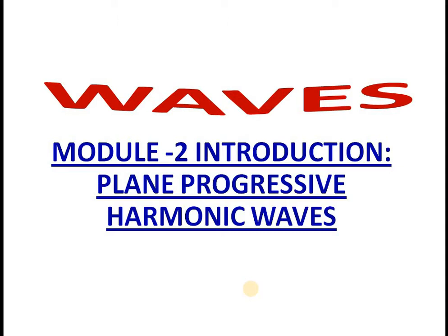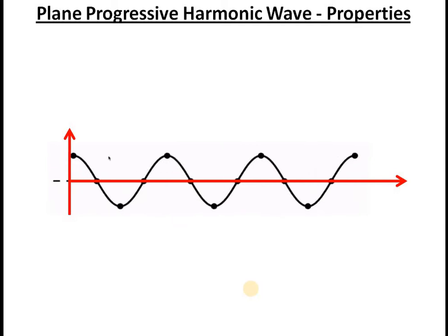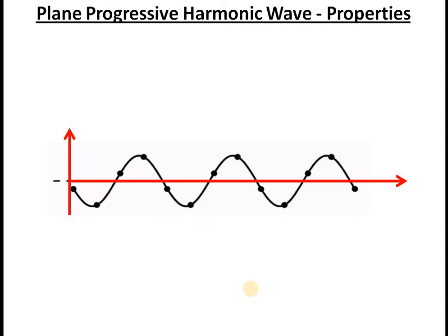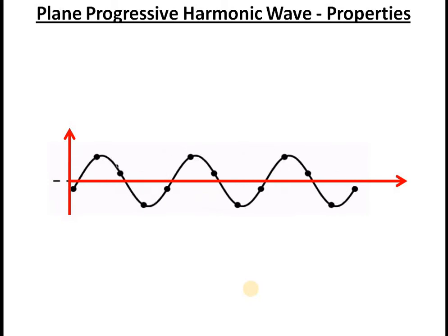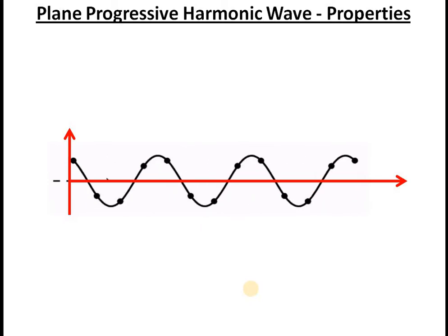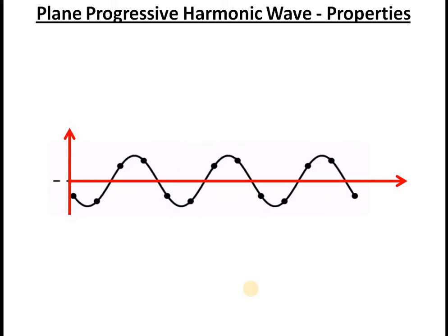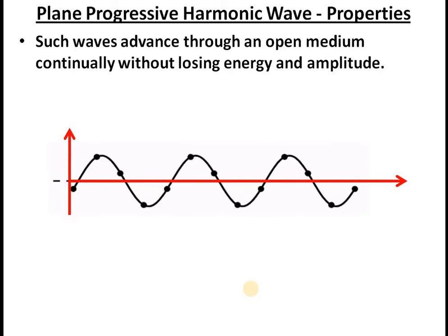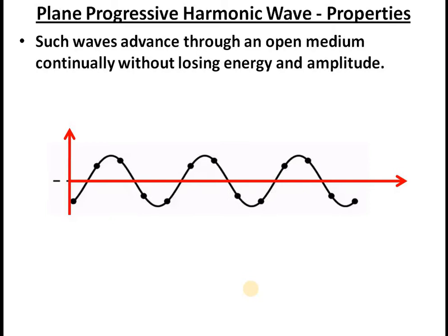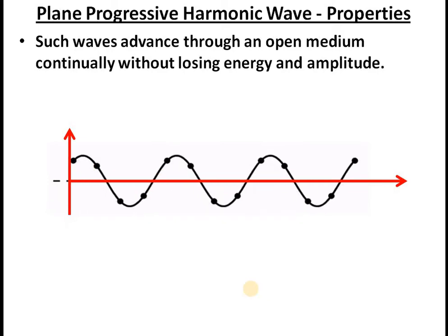We will first see the different properties of a plane progressive harmonic wave and then express it mathematically. The first property: the wave must propagate or advance through a medium without appreciable loss of energy — it must advance continuously without losing appreciable energy. When energy is not lost, its amplitude will be almost constant. This is the first condition.